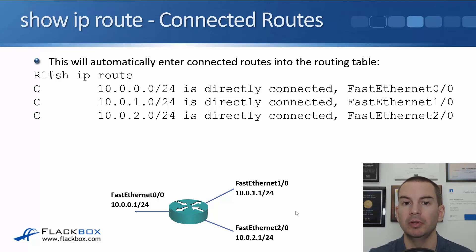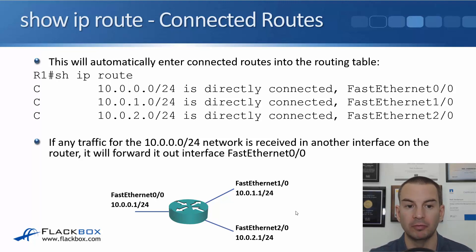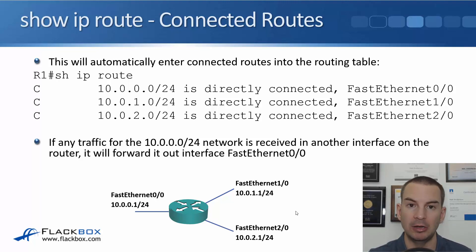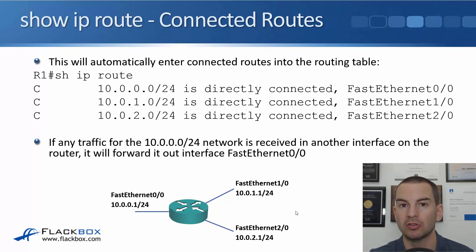The command to view the routing table on a router is 'show IP route.' After configuring those IP addresses, the directly connected routes will show up in the routing table. If traffic for the 10.0.0.0/24 network is received on another interface, the router will forward it out FastEthernet 0/0. Traffic for 10.0.1.0/24 goes out FastEthernet 1/0, and traffic for 10.0.2.0/24 goes out FastEthernet 2/0. So as soon as you've configured IP addresses on the router interfaces, it can automatically route traffic between those directly connected networks.